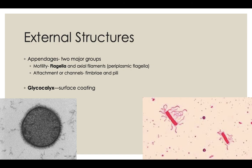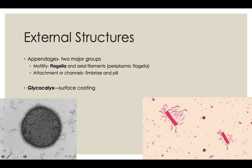On the outside of bacteria you're going to find a couple of things. The vast majority of external structures are used for movement. The two major groups of appendages are flagella, used for movement, and fimbriae and pili, also related to movement and attachment. The other type of external coating is called a glycocalyx — a sticky coating that surrounds the bacteria.